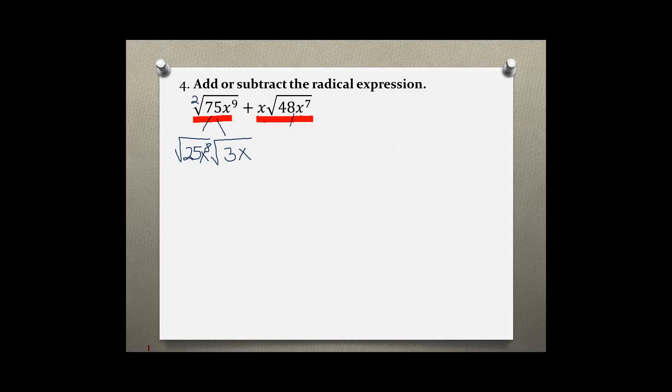Now let's do the same thing with the second term. I already have an x outside and then I'm going to split the 48x to the 7th into its perfect and non-perfect part. So 48 has two factors where one of them is the perfect square root, which is 16, and 16 times 3.